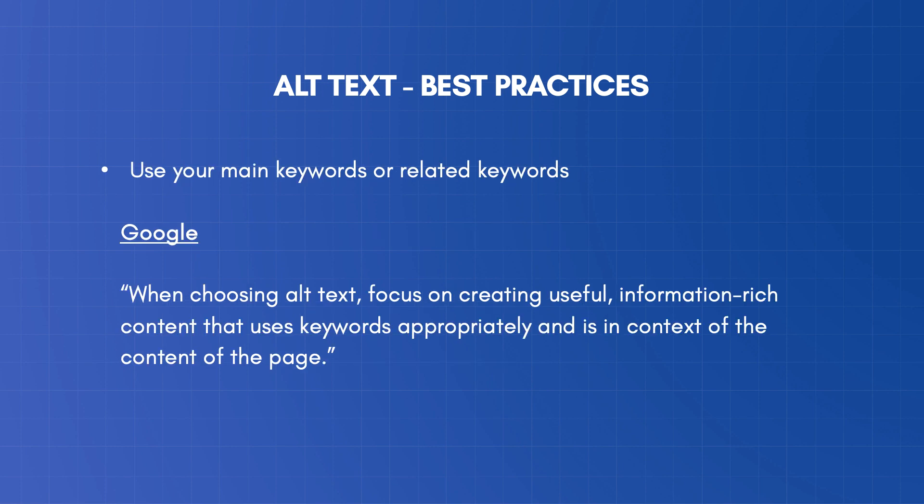When it comes to keyword usage, avoid filling the alt text with keywords, but do make sure to include your target keyword or related keywords. As stated by Google, when choosing alt text, focus on creating useful, information-rich content that uses keywords appropriately and is in context of the content of the page. A nice tip to follow is to use images that are relevant to your content, so you can have alt text that is both descriptive and keyword-rich.